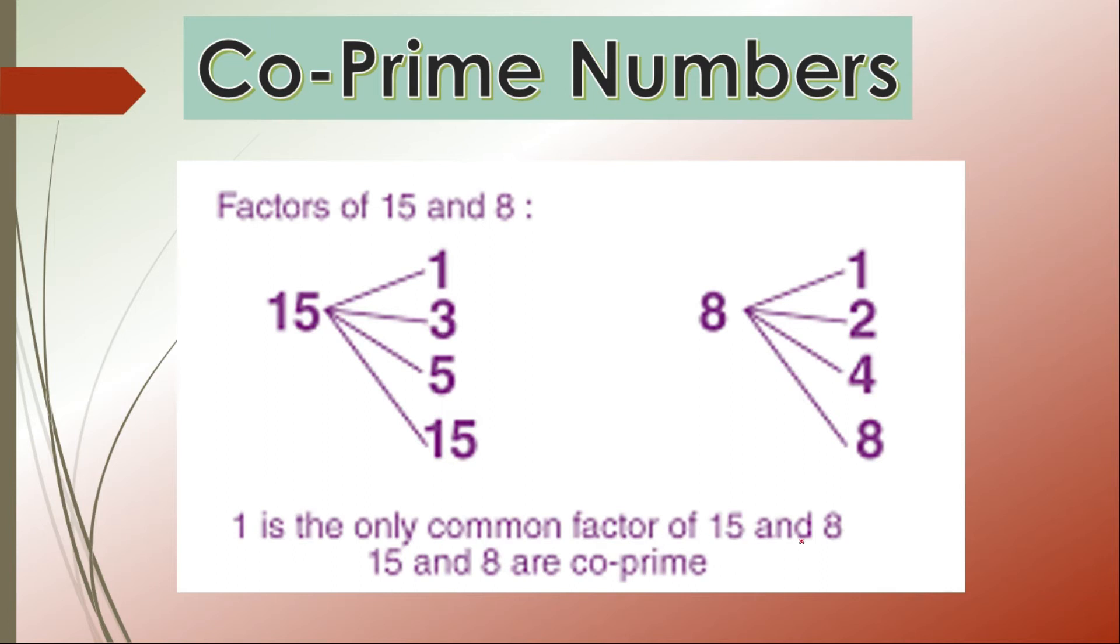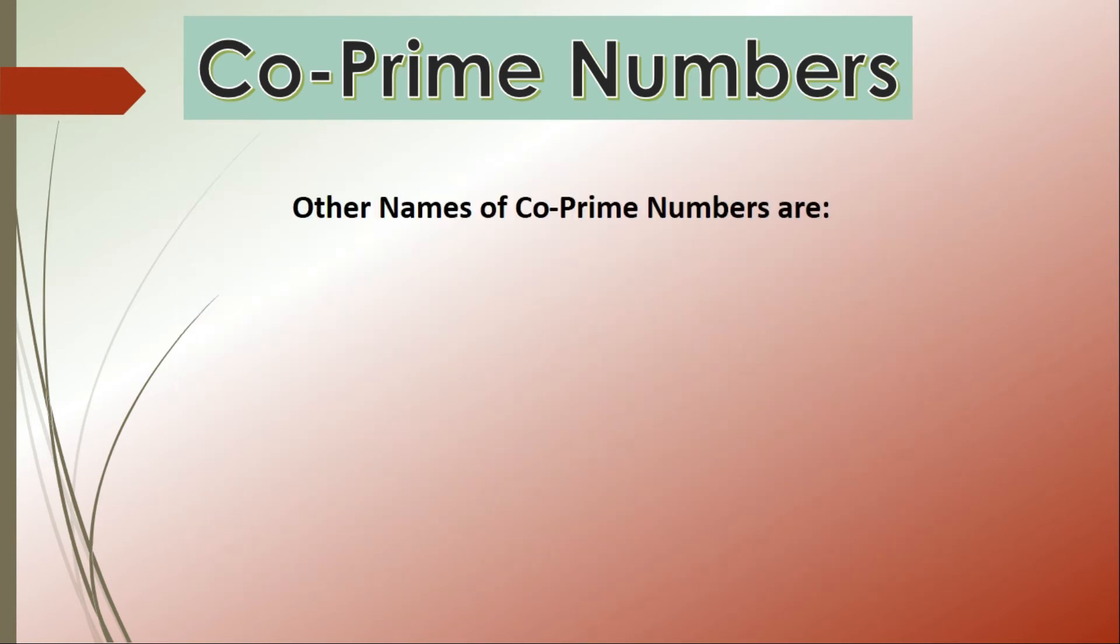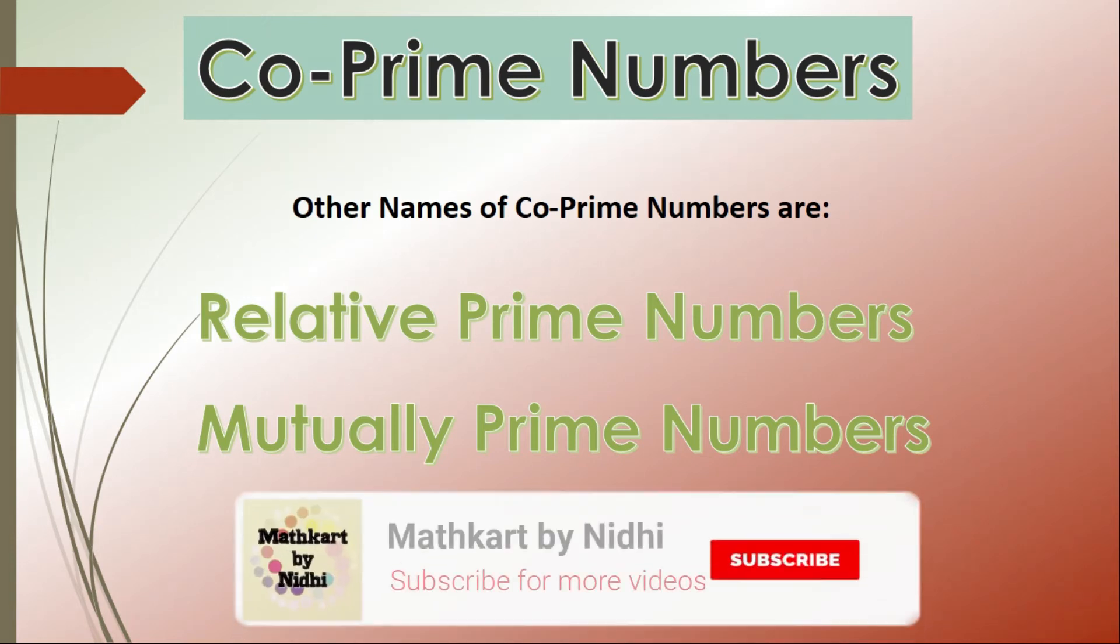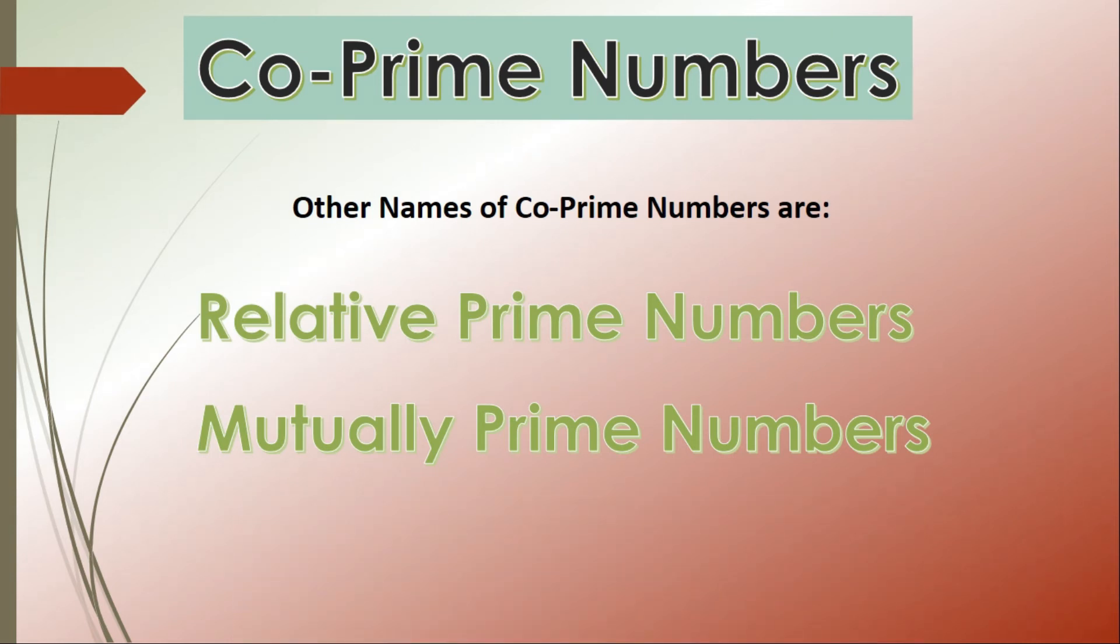Other names of co-prime numbers are relative prime numbers and mutually prime numbers. So sometimes you will see these terms relative prime numbers or mutually prime numbers - so you should not get confused, they are talking about the co-prime numbers itself.